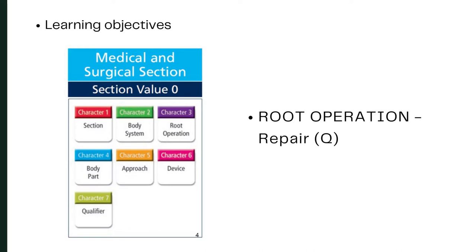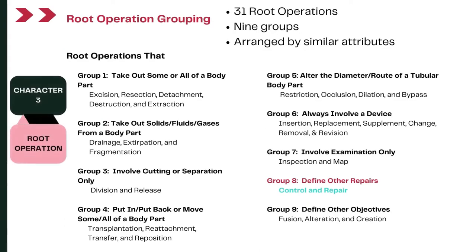Remember, the medical and surgical section is the most important and the biggest section in ICD-10 PCS. There are a total of 31 root operations in the medical and surgical section and these root operations are divided into nine groups based on similar kinds of attributes of surgical procedures.